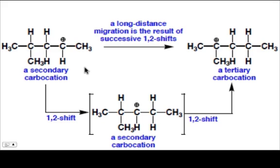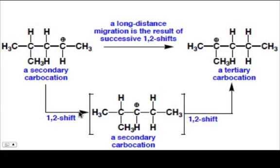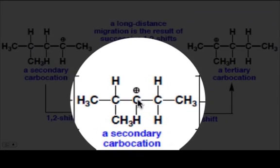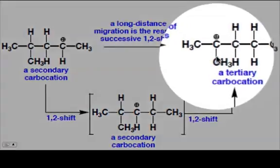And if you were to see what may look like a longer shift, it's actually just successive 1,2 shifts taking place. So in the example we see here, it's just this secondary carbocation undergoing a 1,2 shift to form this secondary carbocation which undergoes another 1,2 shift to form the tertiary carbocation on the far right.